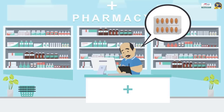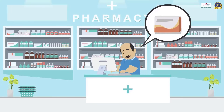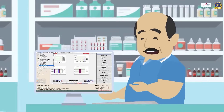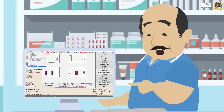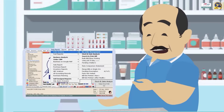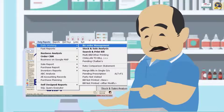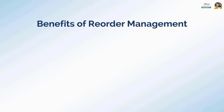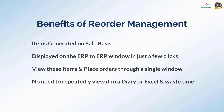Apart from this, if you want to place an order on a sale basis — meaning items in your stock that have high demand in the market — this facility is also available. You can do this with the help of the Reorder Management option in Marg software. With reorder management, items generated on a sale basis will be loaded on the ERP-to-ERP order window in just a few clicks, so you don't have to repeatedly check and order through a diary or Excel.